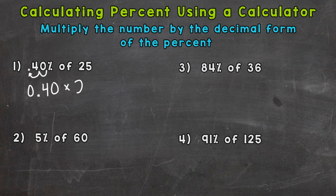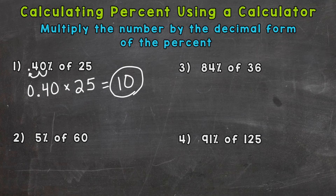Bring our number 25 down here. So plug in 40 hundredths times 25, and that's going to give us what 40% of 25 is. And the answer is 10. 10 is 40% of 25.